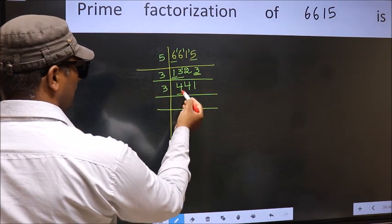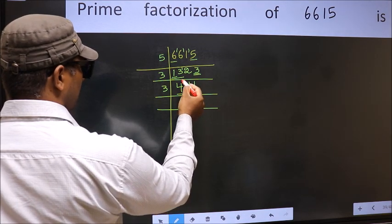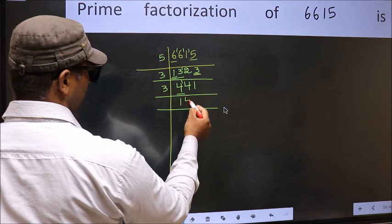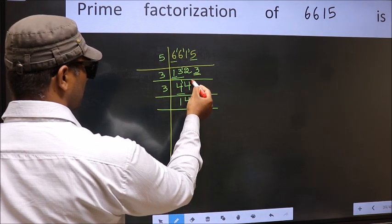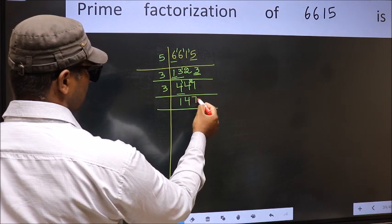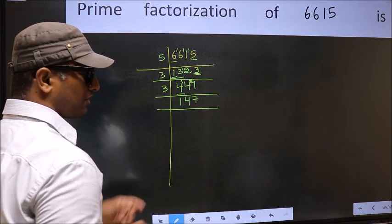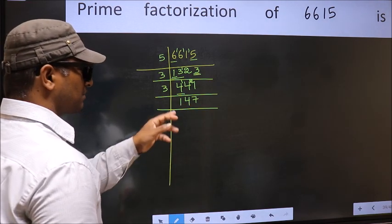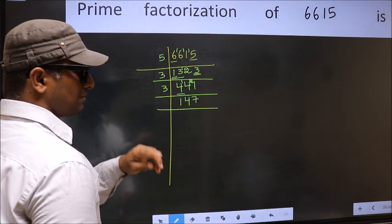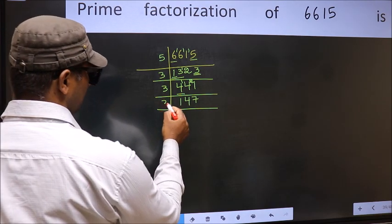First, number 4. A number close to 4 in the 3 table is 3×1 is 3. 4−3 = 1, carried forward: 14. A number close to 14 in the 3 table is 3×4 is 12. 14−12 = 2, carried forward: 21. When do we get 21 in the 3 table? 3×7 is 21. Now to check whether this result is divisible by 3: add the digits 1+4+7 = 12, and 12 is divisible by 3, so take 3.